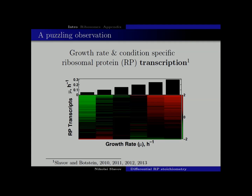The surprising thing was that not all ribosomal proteins were transcriptionally induced to the same level. Some were induced a lot — by an order of magnitude or more — some were not really induced, and some even appeared to be repressed. At the time, this didn't quite make sense in terms of the requirement to make these proteins in stoichiometric ratios, but we didn't have much to go on because these are mRNA levels, and mRNA levels don't always correlate to protein levels, particularly for ribosomal proteins. So we just ignored that.